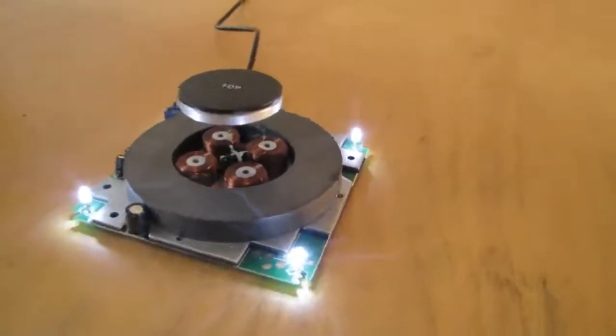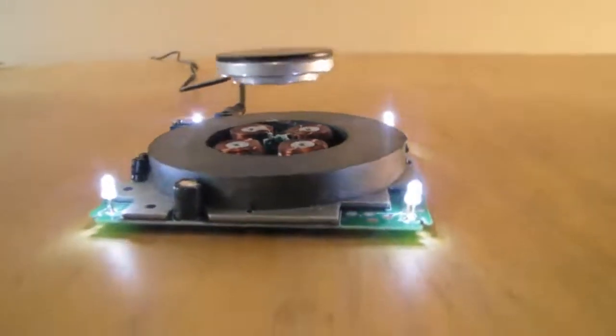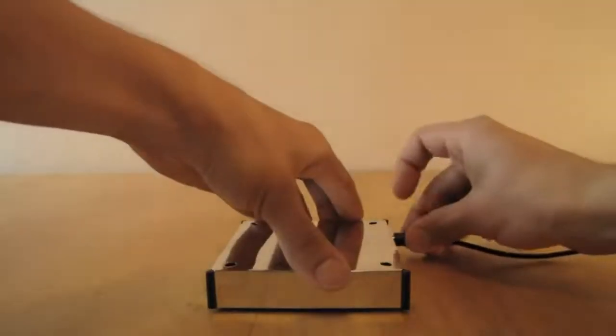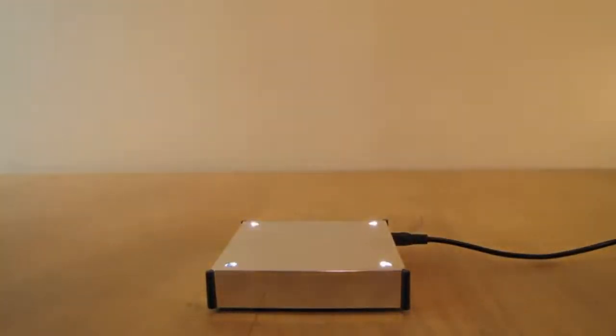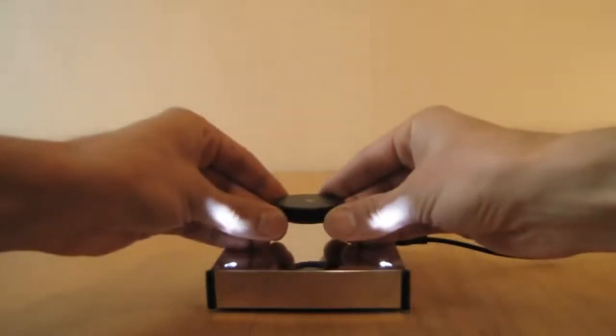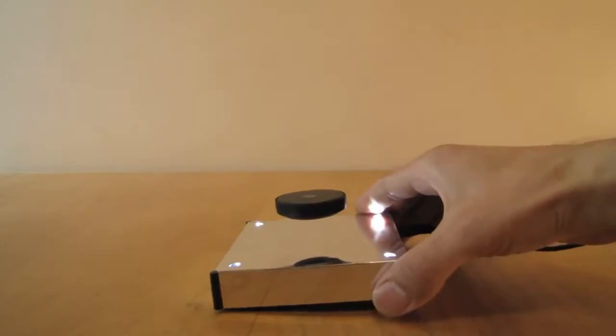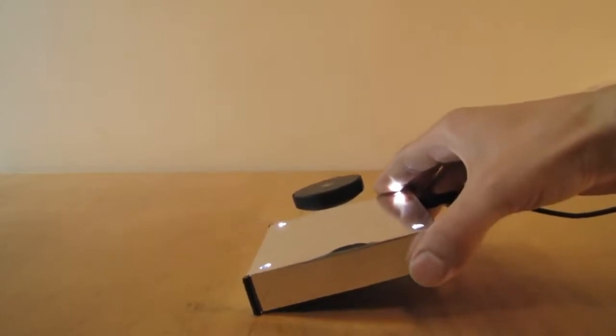The levitation is achieved by cooperative action between large attracting ferrite disc magnet and repelling electromagnets that are controlled by a feedback loop which continuously adjusts the electromagnets in relation to the levitating magnet's position.